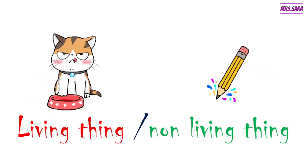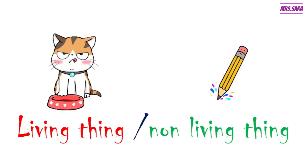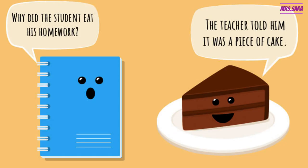So living things need three things: food, water, and air. Non-living things don't need food, water, or air. Living things can do five or more things: breathe, eat, move, have babies, and feel. This was our lesson for today — I hope you enjoyed it. Don't forget to like, subscribe, and share. Goodbye!